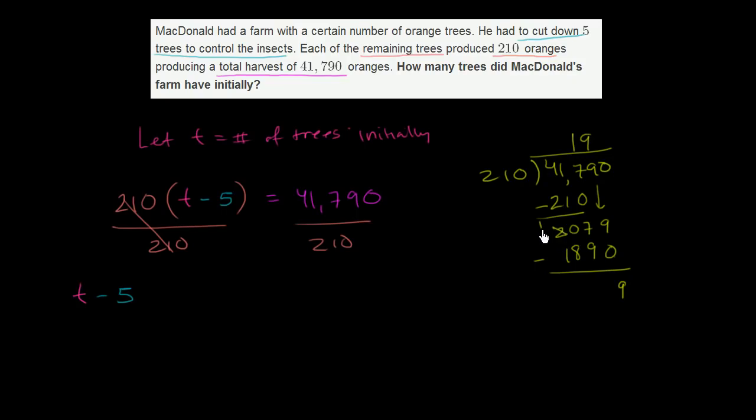So let's take 1,000 from there. Let's give that 1,000 to the hundreds place, so it becomes 10 hundreds. But then we have to take 100 from the hundreds place, so this becomes 9, and give it to the tens place, so this becomes 17 tens, or 170. So 17 minus 9 is 8. 9 minus 8 is 1, so we get 189.